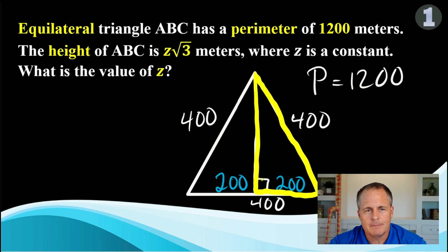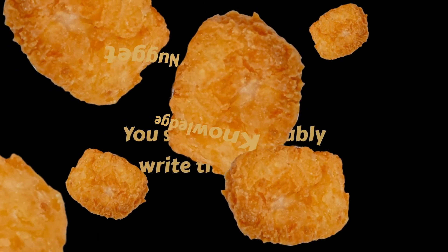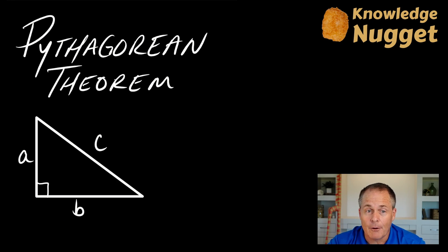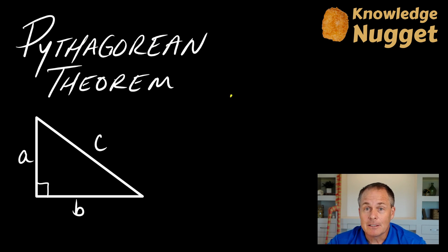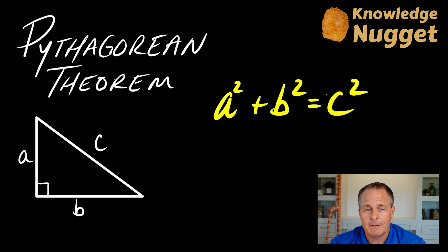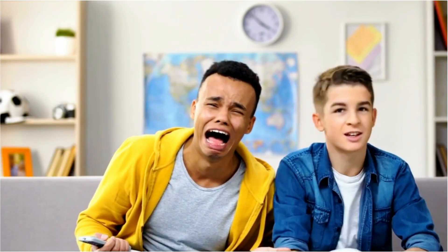It's time to write an equation. Do you know what equation to use? It is the Pythagorean theorem. Do you know the Pythagorean theorem? It's a squared plus b squared equals c squared. In my opinion, the Pythagorean theorem is the most famous formula in geometry. So if you don't know it, I need to see you after class.